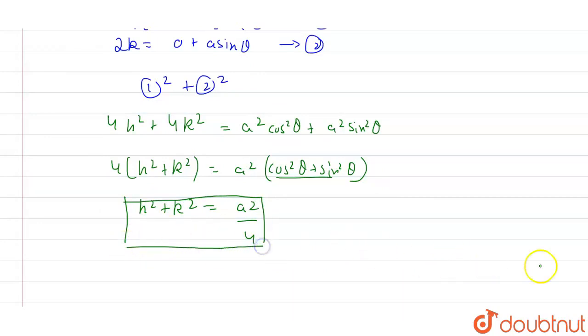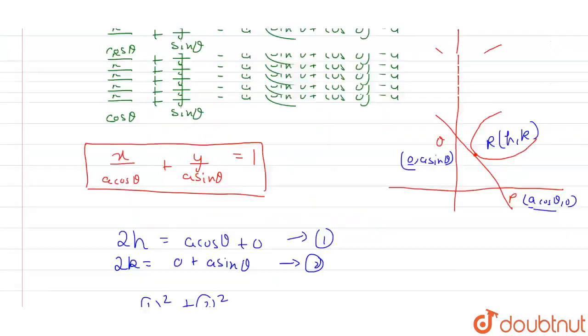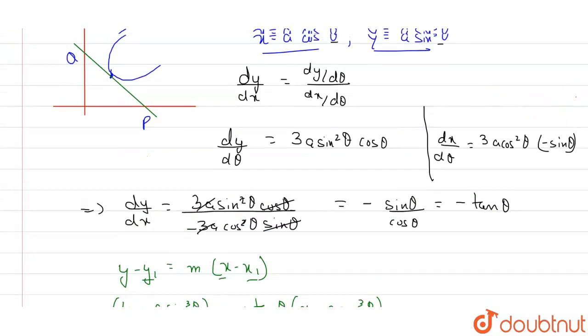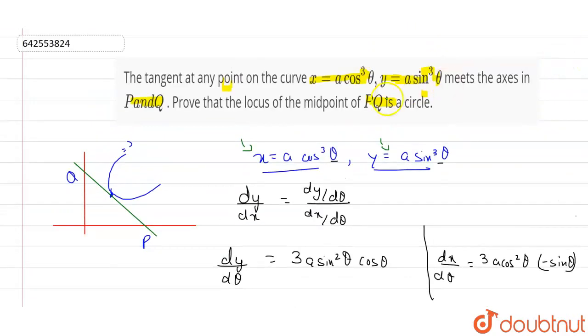We know this is the equation of a circle. So we have just proved what the question asked — that the locus of the midpoint of P and Q is a circle. That's it.